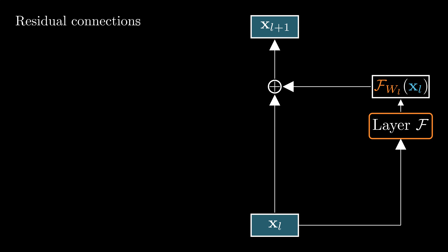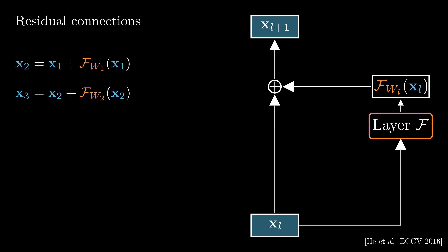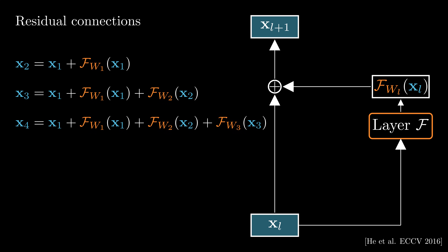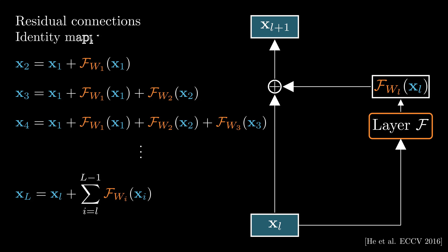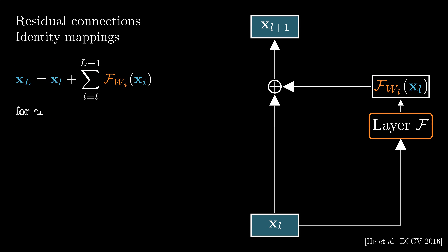But why do the residual connections make the training easier? The output of the first layer, x2, is the input x1 plus the residual mapping f(x1). Similarly, the output of the second layer, x3, can replace x2 with x1 and f(x1). Repeating this process recursively, we can represent the feature at any deeper unit L as the feature at any shallow unit plus a residual function. This identity mapping ensures that features can be directly propagated from one unit to any other unit.